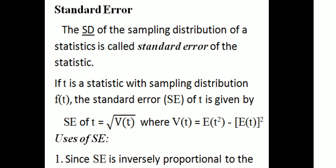The standard deviation of the sampling distribution of a statistic is called the standard error. If t is a statistic with sampling distribution f(t), the standard error SE of t is given by: SE(t) = square root of V(t), where V(t) = E(t²) − [E(t)]², which is the variance of the statistic.